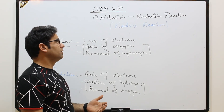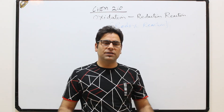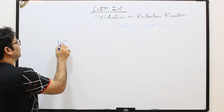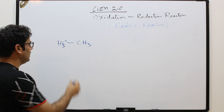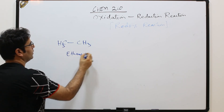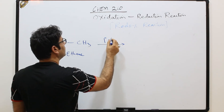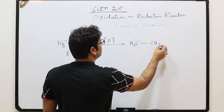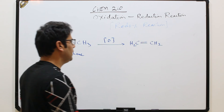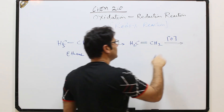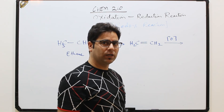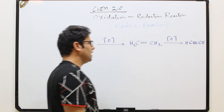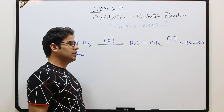Let me give a simple example of an oxidation-reduction reaction. If we take ethane (CH₃–CH₃) and go for oxidation, there is release of two hydrogens — it gives CH₂=CH₂ (ethene). If we oxidize again and release more hydrogen, it gives CH≡CH (ethyne). Release of hydrogen is also oxidation.